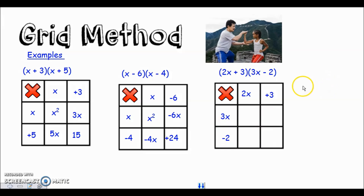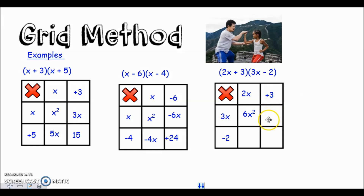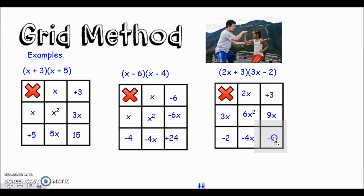The final example is included because there's a common mistake in the first box. You've got two x times three x: two times three is six, but then x times x is x squared, so the result must be six x squared - not six x, which many people write, forgetting to square the x. The second box is three times three x, giving nine x. The bottom box is two x times minus two, giving minus four x. The last box is three times minus two: positive times negative is negative, so minus six.